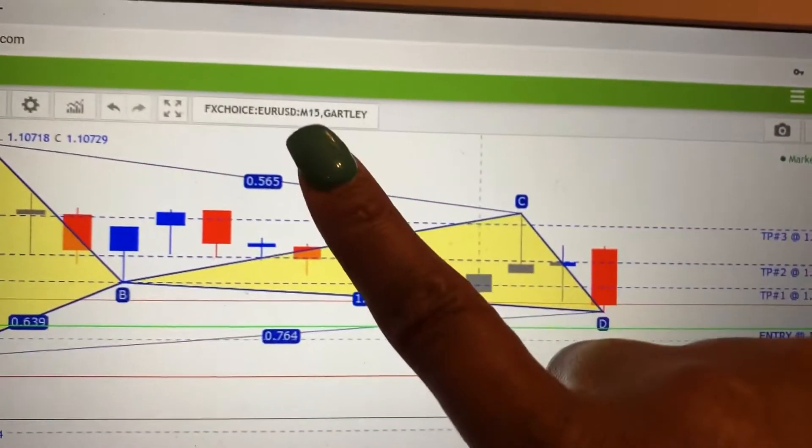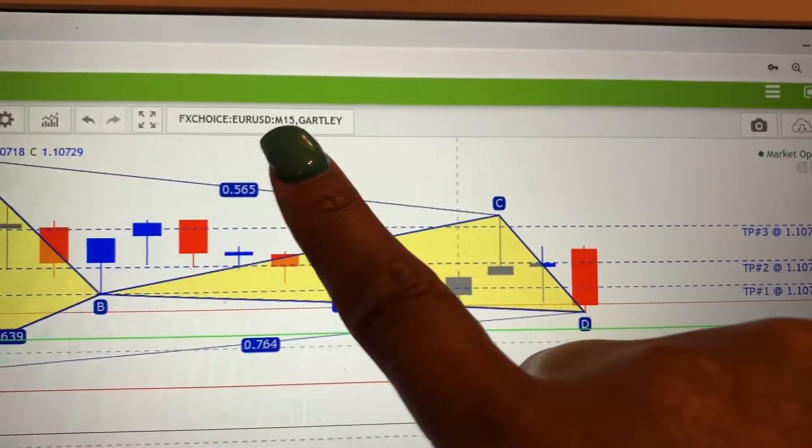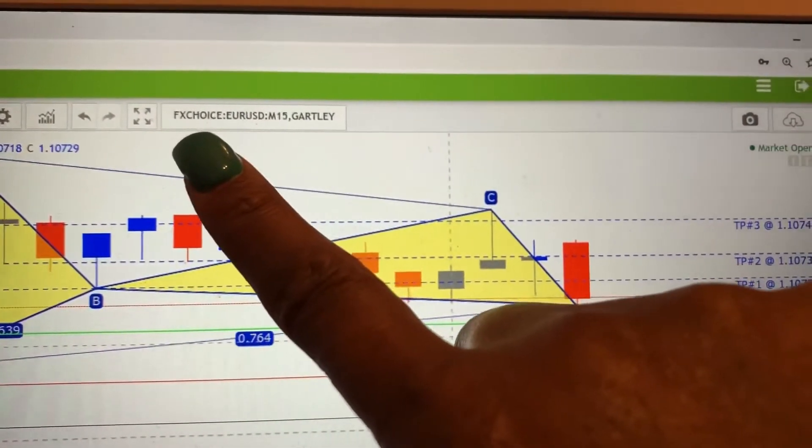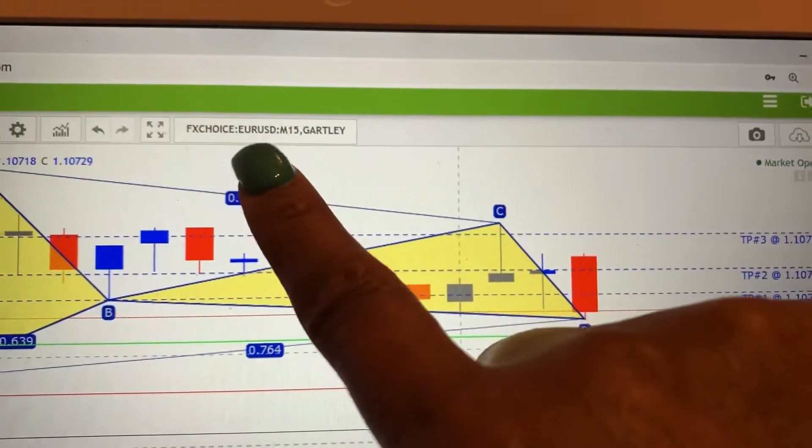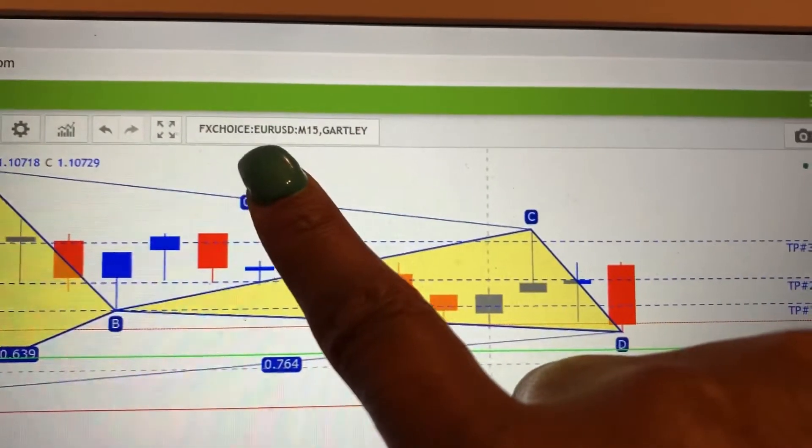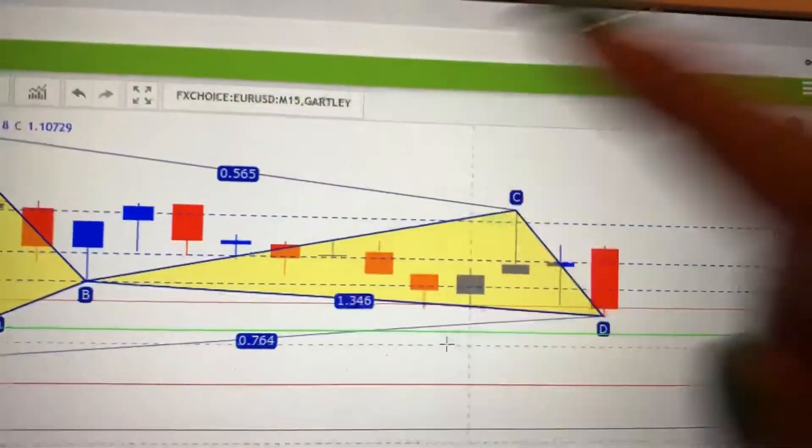First thing you look at is what is it telling you to trade? You look right there in the rectangle. It tells you the first letters there, FH Choice, that's the broker. After the colon, you have EURUSD. We're trading the euro versus US dollar. M15, that's a 15-minute chart.